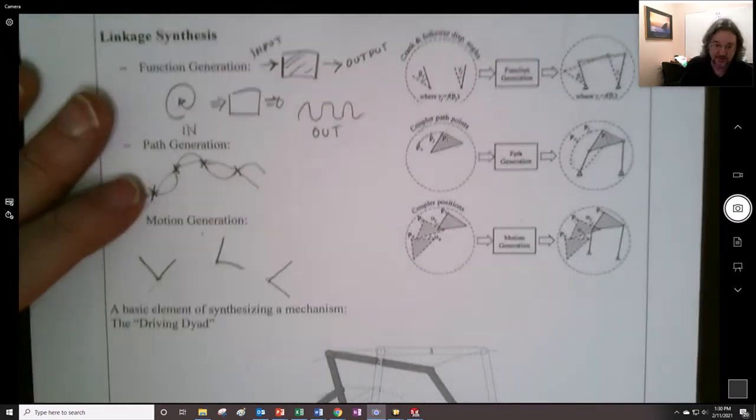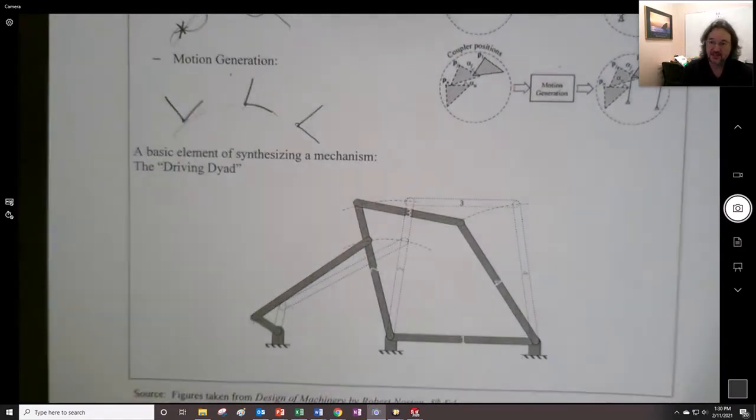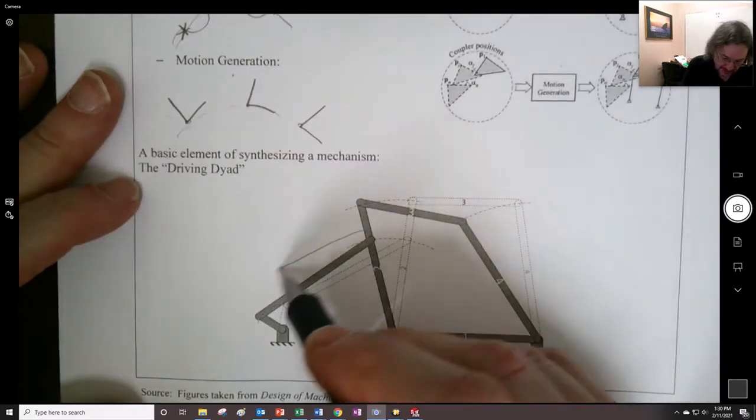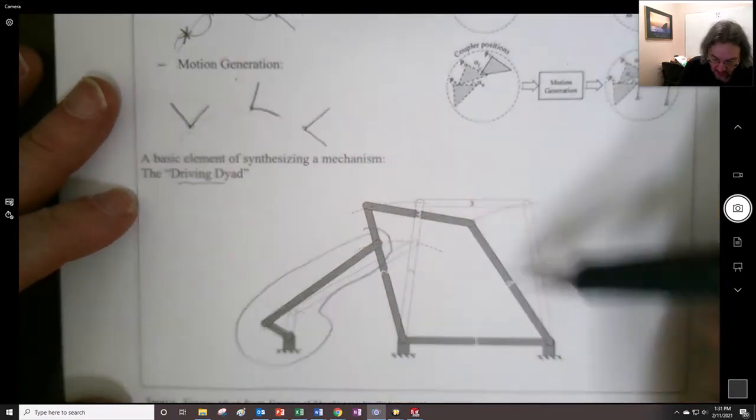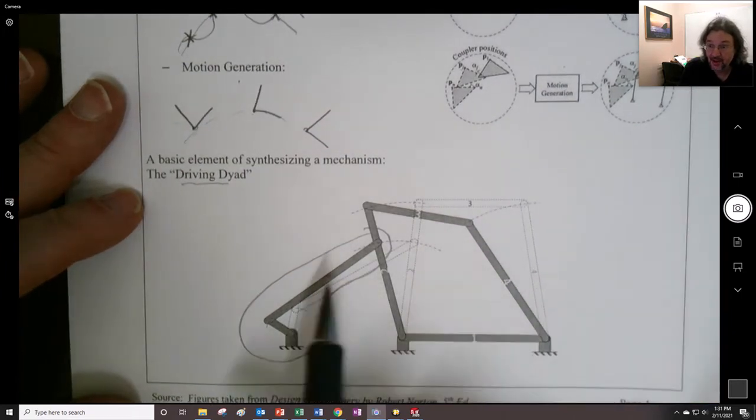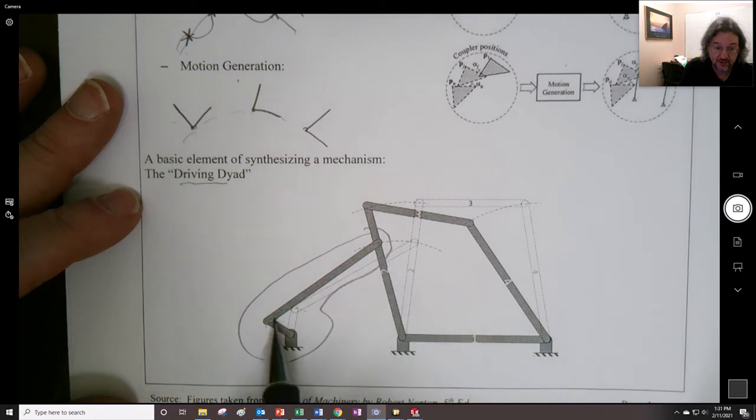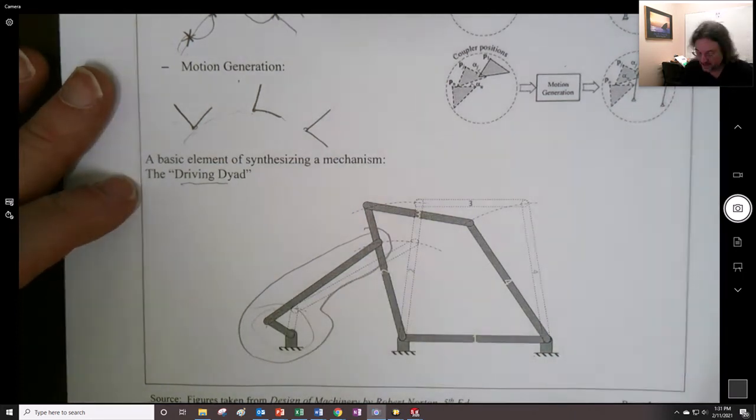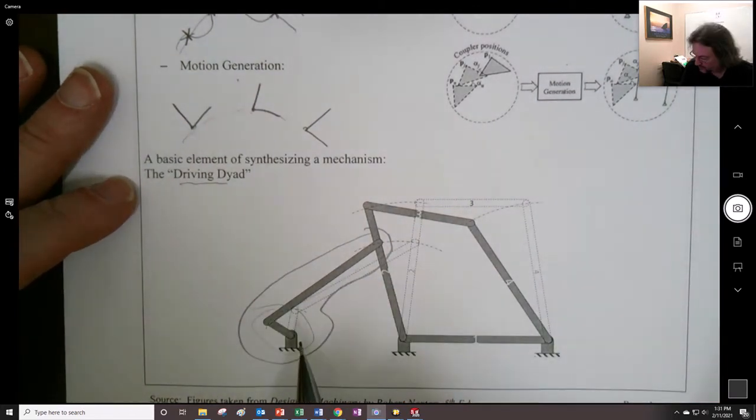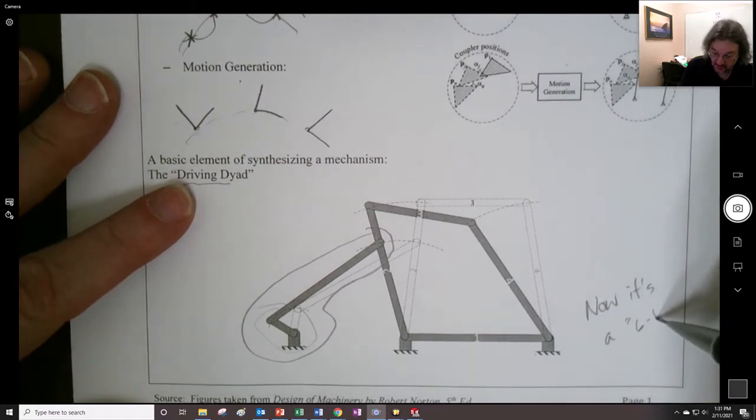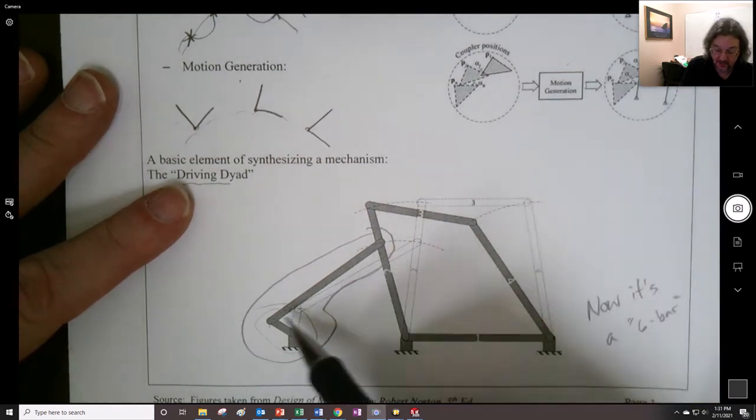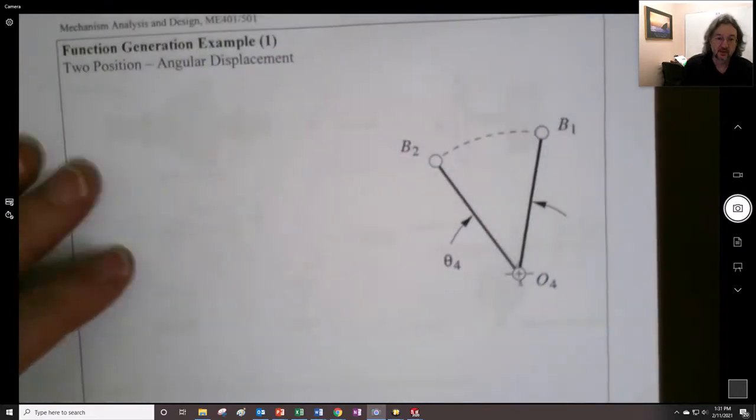It might not be possible to have this type of orientation. So you have to be kind of careful there. You can't over-constrain the thing. Like, say, here are all the requirements, and it has to do this. It might not be possible to make a mechanism that does that. So there's a little bit of added difficulty. So there's the function generation, path generation, and motion generation. Now, the most basic element that we will deal with when doing a, synthesizing a four-bar, is something that we're going to refer to as the dyad. And, or the driving dyad. That will allow us to make a four-bar do something that we want to do, like to rock back and forth, and between two set points, depending on the shape of the dyad.